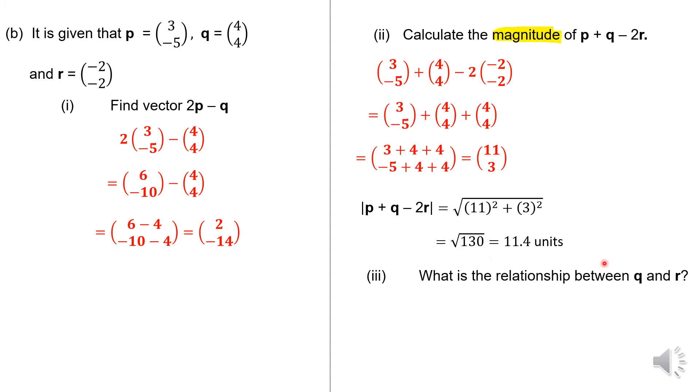Then they ask, what is the special relationship between Q and R? So when you look at Q and when you look at R, you can see that there is something here. You will realize that Q is actually, if you take out a negative 2R, so they are parallel. That is exactly what we are looking for in that particular answer.